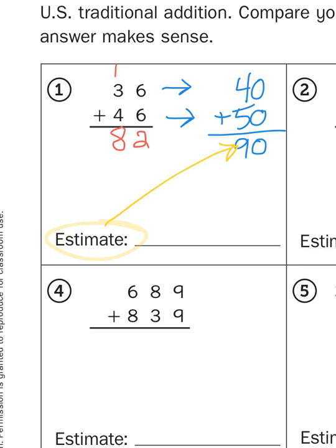So my actual answer for this problem, 36 plus 46, is 82. Now that's pretty close to 90. Now 82 would not round up to 90, but it's close enough that makes our answer seem reasonable.